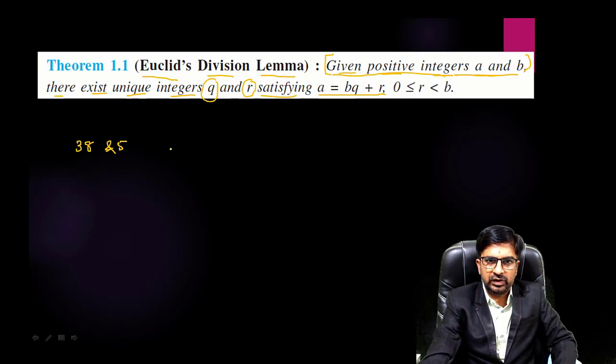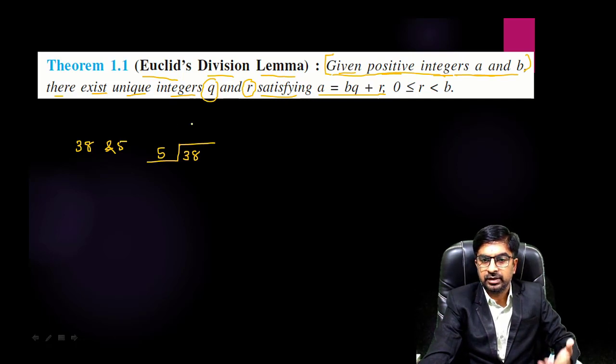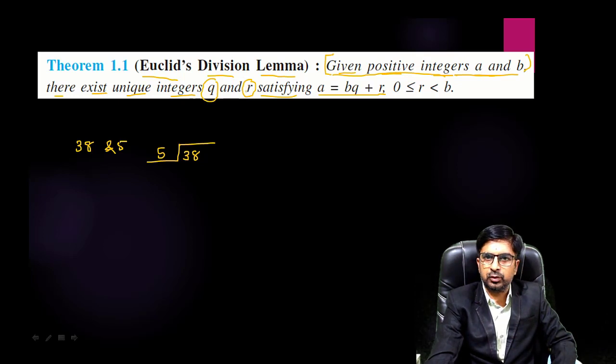If you divide 38 by 5, you will get quotient and remainder. So that will be your q and r.